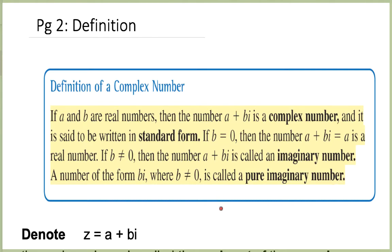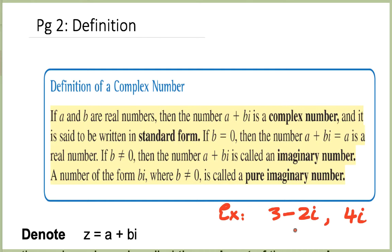Let's look at some examples. Take 3 minus 2i — this is an imaginary number. Or numbers like 4i — this is a purely imaginary number. Or numbers like minus 8 minus i — this is an imaginary number. Each one of these is written in the standard form.